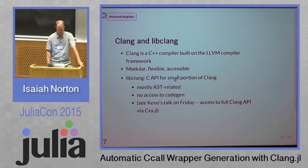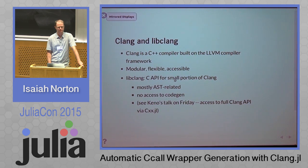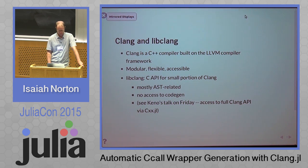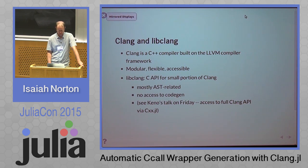A quick introduction to Clang and libClang: Clang is a C++ compiler built on the LLVM framework, which is the compiler framework used by Julia that makes Julia fast. It is modular, flexible, and accessible, which distinguishes it from other open source C++ compilers. libClang is a C API for a small portion of Clang, mostly related to the AST — walking the code representation. There's no access to the code gen parts, but if you're not aware of it, see Keno's talk tomorrow, where you can access the full Clang API with CXX.jl and all sorts of other absolutely magical things.